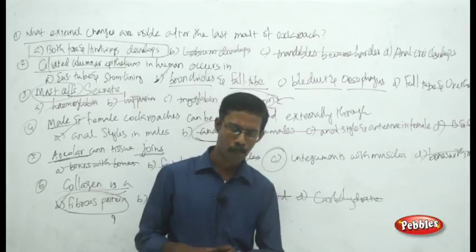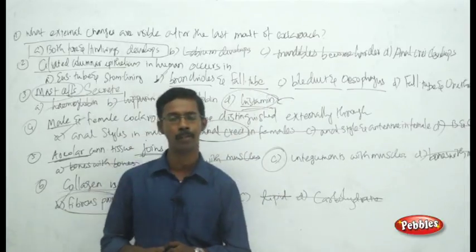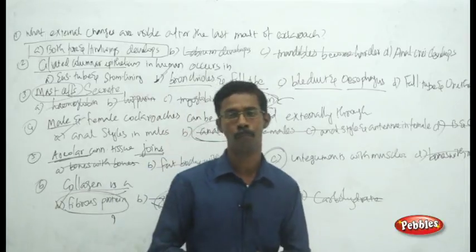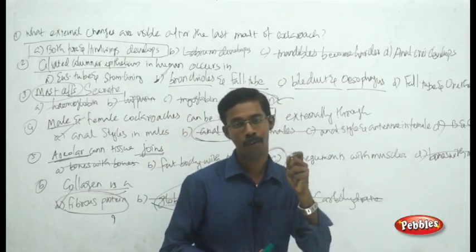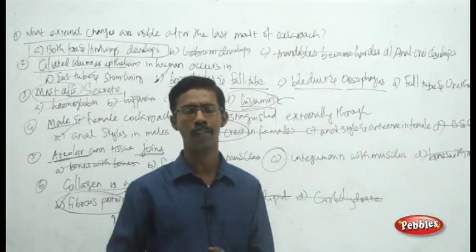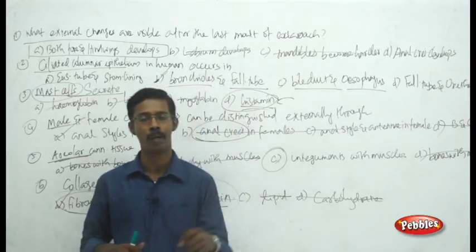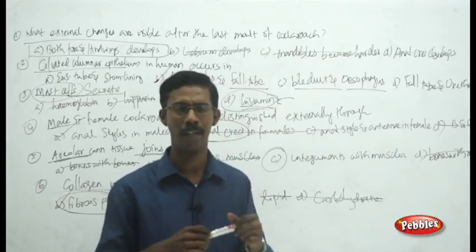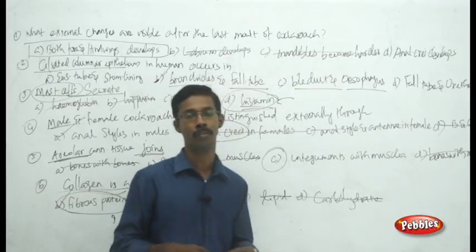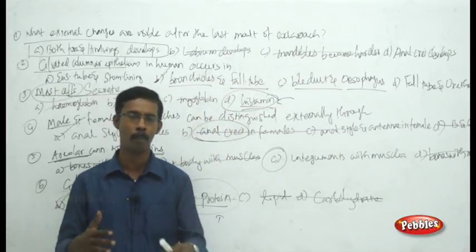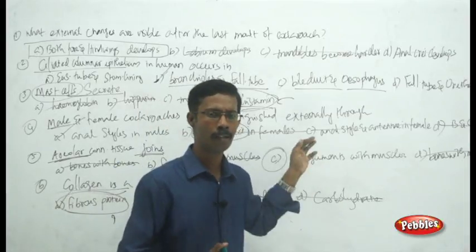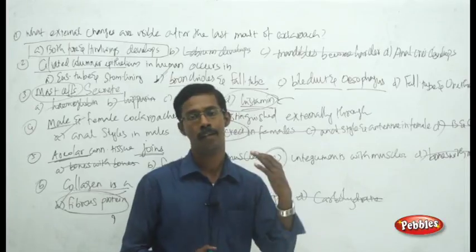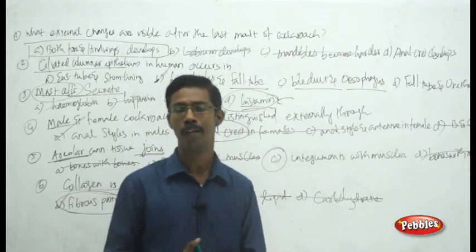This is how you answer questions from these chapters. In this unit, you will always get direct questions from morphological features, identification characters, examples, and locations of particular tissues and cells, or external and anatomical features of animal or plant systems. In the next unit, we are going to discuss cells, biomolecules, and their details.